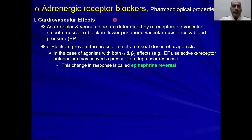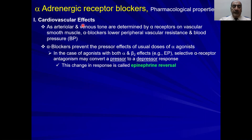We are going to start with the alpha adrenergic blockers and their pharmacological properties. Before I talk about the cardiovascular effects, I remind you that whenever you are talking about antagonist blockers, you have to first remember the agonist effect — go back to the normal sympathetic response. If you are under stress or fight-or-flight response, what would happen? And then when you use the blocker, mostly the opposite would occur.